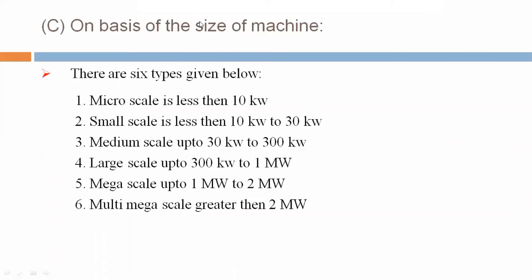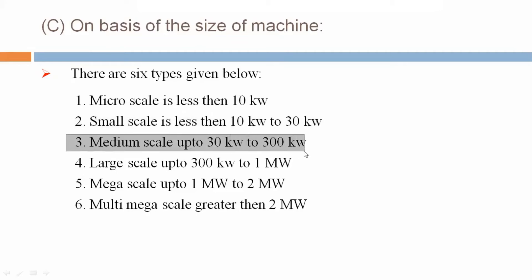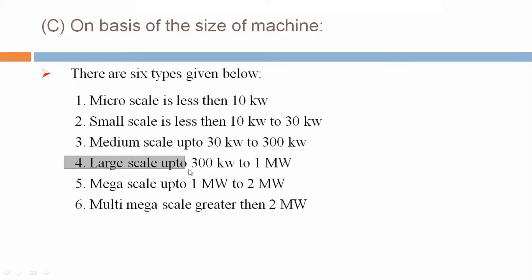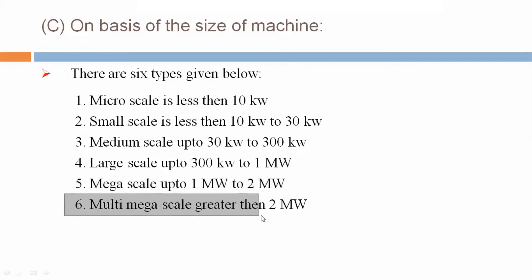C: On the basis of the size of machine, there are several types. Micro scale: less than 10 kilowatt. Small scale: 10 kilowatt to 30 kilowatt. Medium scale: 30 kilowatt to 300 kilowatt. Large scale: 300 kilowatt to 1 megawatt. Mega scale: 1 megawatt to 2 megawatt. Multi-mega scale: greater than 2 megawatt.